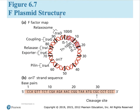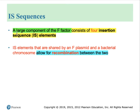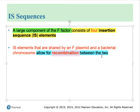The F-plasmid structure contains an origin of replication, some insertion sequence elements, and those 40 or so genes. A large proportion of the F-factor consists of four insertion sequences — regions of DNA that have some homology to similar sequences within the bacterial main chromosome. These regions of DNA homology between the F-factor and the chromosomal DNA are the regions where recombination between the two takes place once the copy is transferred into the recipient cell.